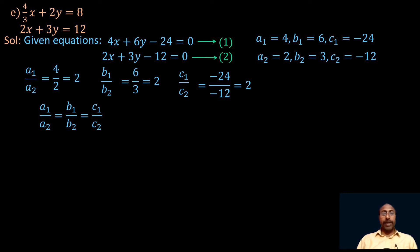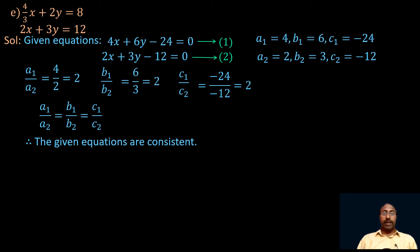We write a1/a2 equals b1/b2 equals c1/c2. Whenever a1/a2 is not equal to b1/b2, we need not find c1/c2. But here a1/a2 equals b1/b2, so we must find c1/c2 as well. Since c1/c2 also equals both a1/a2 and b1/b2, the given two equations are consistent — the lines are coincident, and every point on the line is a solution. So the given equations are consistent. Let us now solve them graphically.